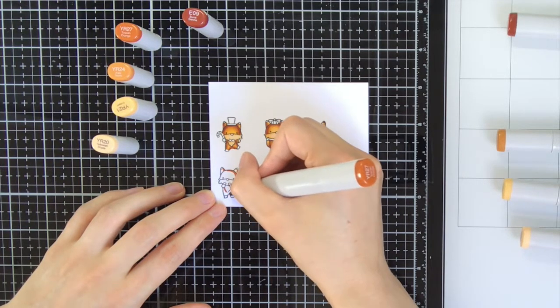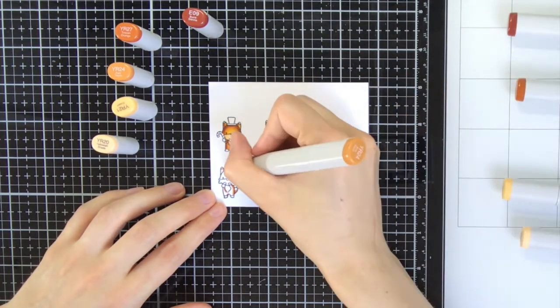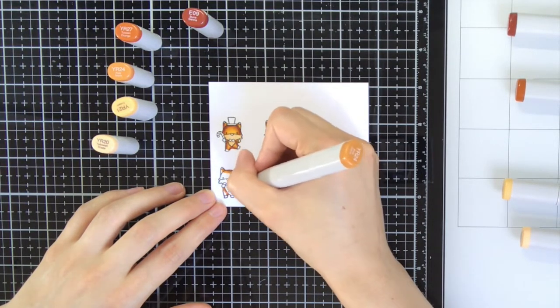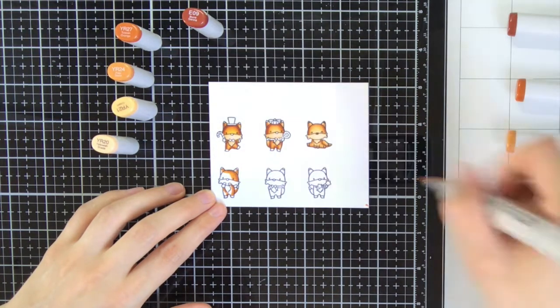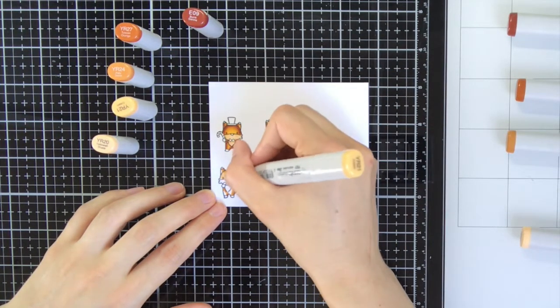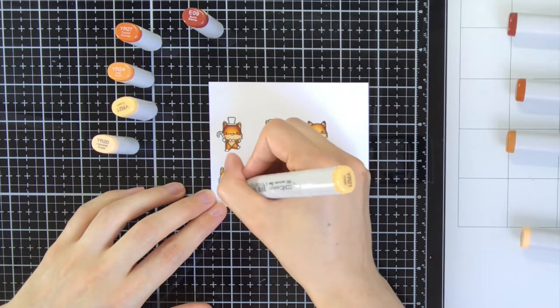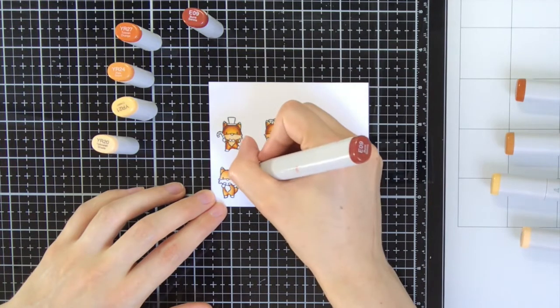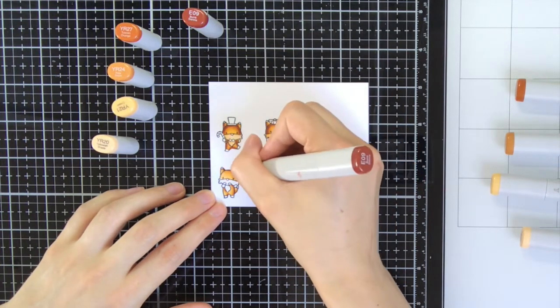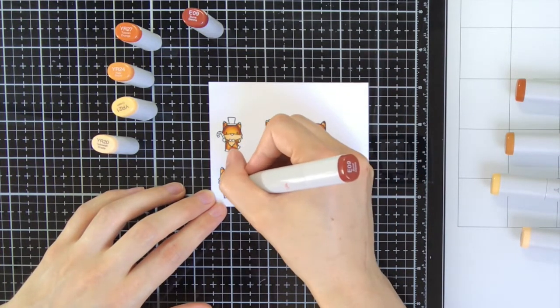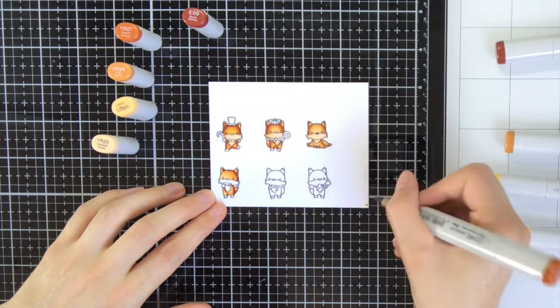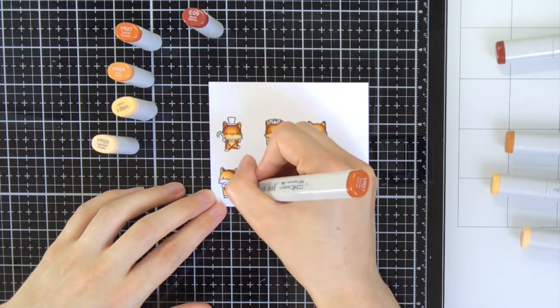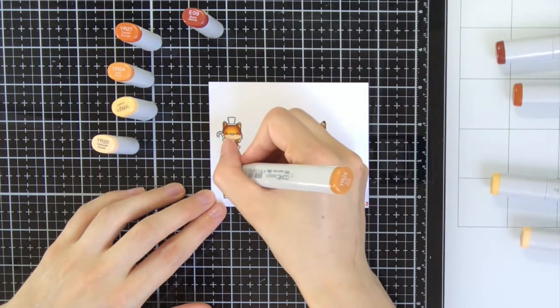For the first fox I just used those colors, but for all the other foxes I decided I also wanted to pull in the E09 as the darkest color, just for the second layer of the Copic coloring. What I always do when I do Copic coloring is I work in two layers, as I find that gives the nicest result. For the first layer I start with my YR27 and work my way down, and then for the second layer of that same fox I start with the E09.